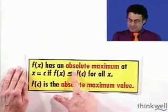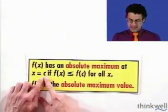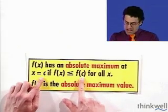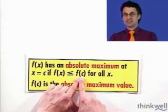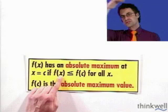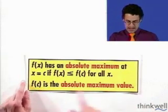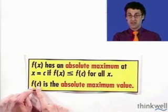So, f of x has an absolute maximum at c if, in fact, that is the highest value the function attains for all the values. So, that is the absolute rock highest. And then we call that value, f of c, that height,